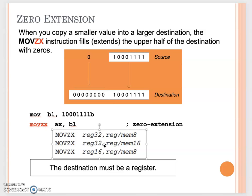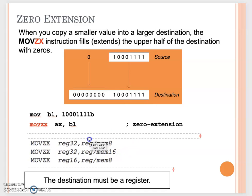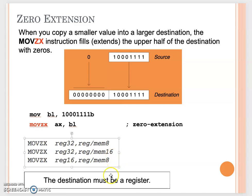You can copy a one-byte value to a four-byte register, or move a two-byte value to a four-byte register. Any space without a value to copy over is filled with zero. Similarly, you can have a two-byte register as the destination with a one-byte register or one-byte memory operand as the source. Note that MOVZX requires the destination to be a register. This is the zero extension, good for unsigned integer extension.